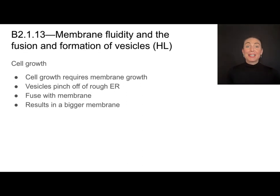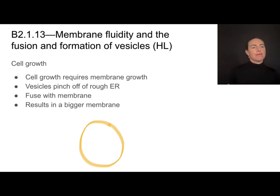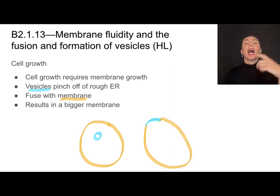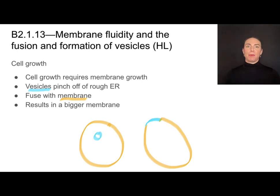Cells use a very similar process when they want to grow. Little vesicles pinch off of the rough ER and fuse with the cell membrane, becoming integrated into it — and now the cell has grown just a little bit. You can imagine that if 20 vesicles do that, the cell is going to expand quite a bit.